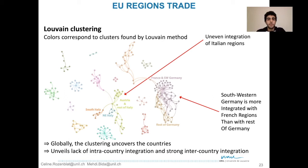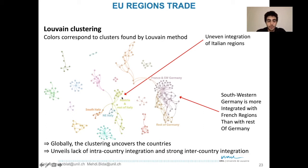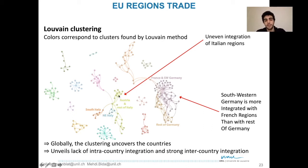The colors now represent the clusters found by the Louvain method. Most countries are also recovered by the Louvain algorithm, but we also see some changes. For example, Italy is no longer one coherent entity — it is now divided into three parts, and one of those parts is actually part of the Austrian cluster.